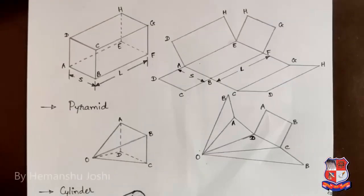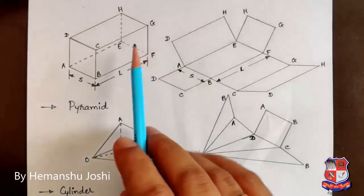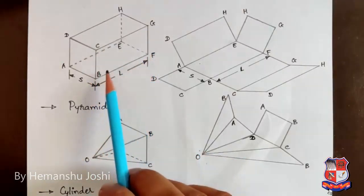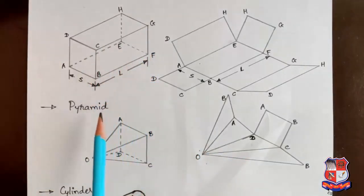Our next object is pyramid. We know that in any prism, the face will be rectangular. Similarly, in any pyramid, the face will be triangular. Here we have total four faces.